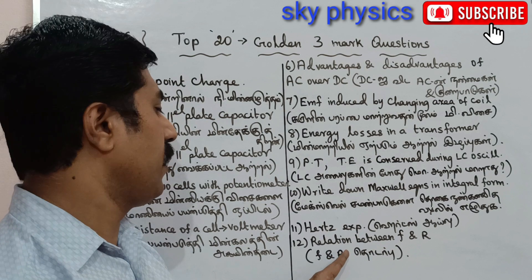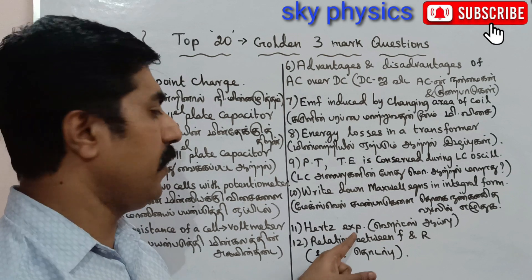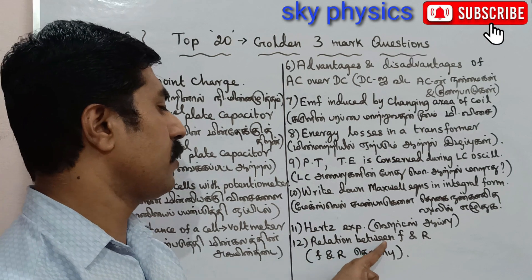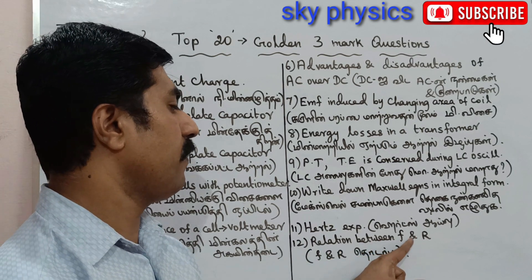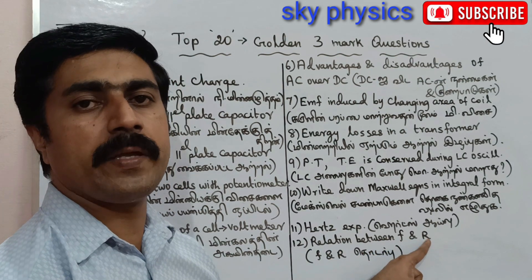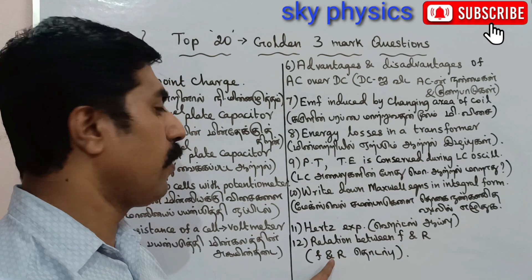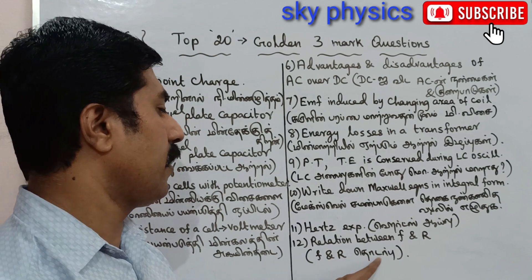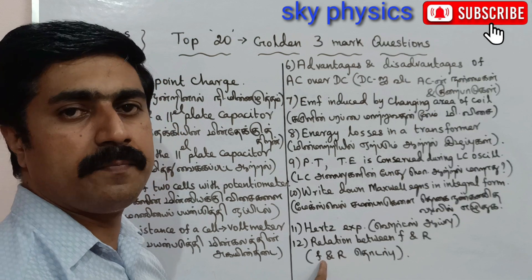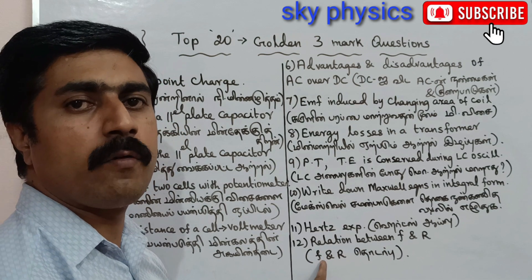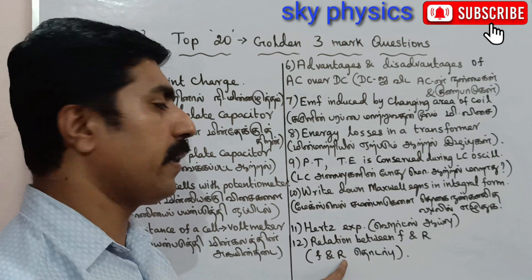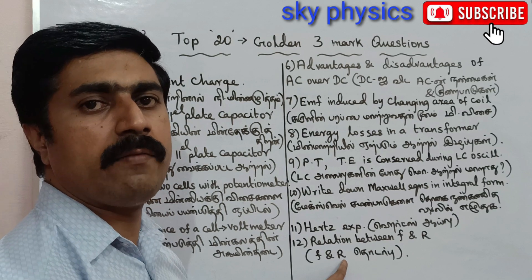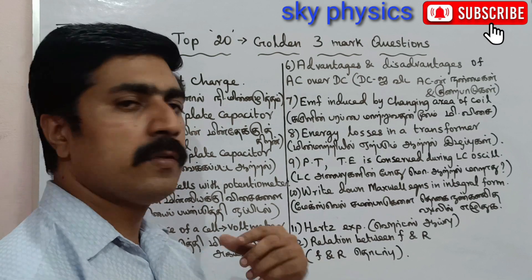Question number 12 — from the 2nd volume: A relation between F and R of a spherical mirror. That is, the focal length and the radius of curvature. (Tamil: F and R of a Sothanayi.)